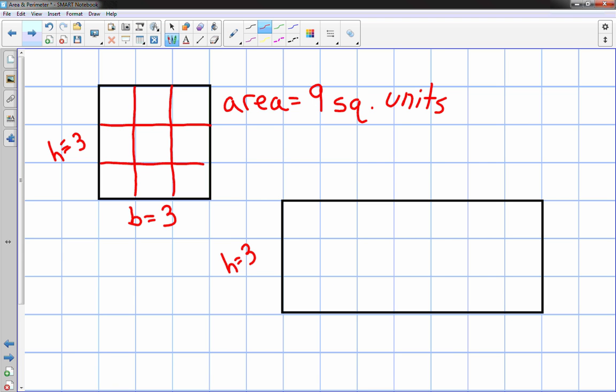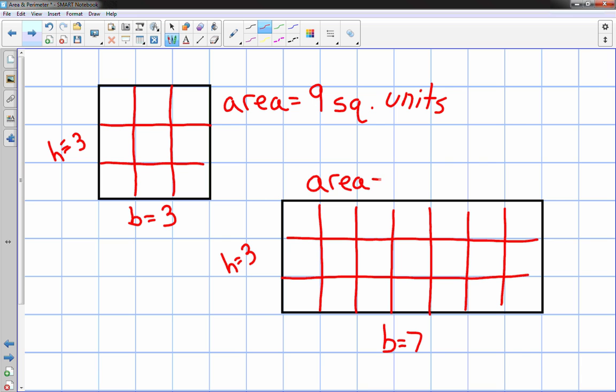Now I have a rectangle here with a height of 3 and a base that looks like 7. Again, I can see it in the graph paper really well, and I can see there's 21 squares in there. So the area is equal to 21 square units.